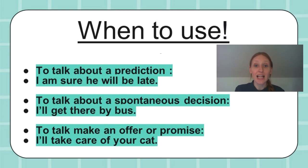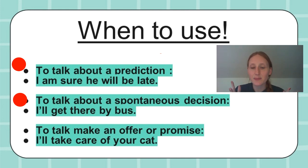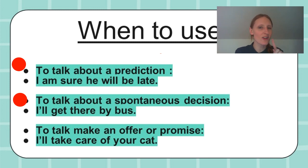Let's talk about when to use will. We use it to talk about a prediction: 'I'm sure he will be late.' And to talk about a spontaneous decision: 'I'll get there by bus.' We say spontaneous because you just thought of this idea — maybe you just finished work and you said, 'I will take the bus today' or 'I'm going to ride the train today.' Spontaneous — not planned.